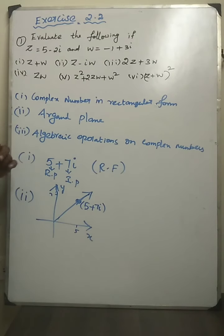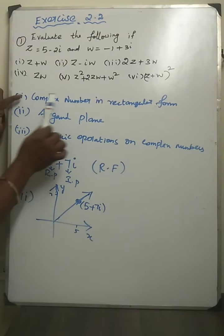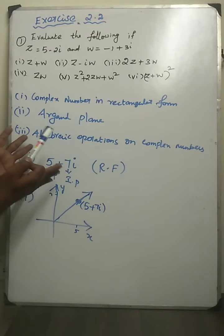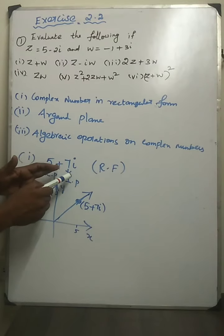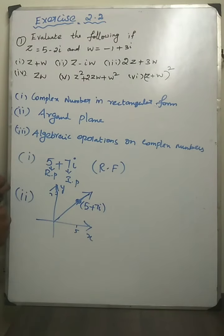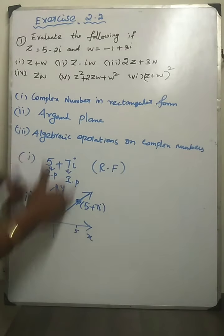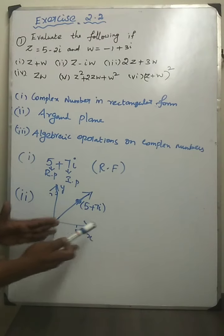First, some basic revisions. What is a complex number in rectangular form? A complex number in rectangular form has a real part and an imaginary part combined. The Argand plane is very simple: the x-axis is for the real part and the y-axis is for the imaginary part — that is the complex plane.